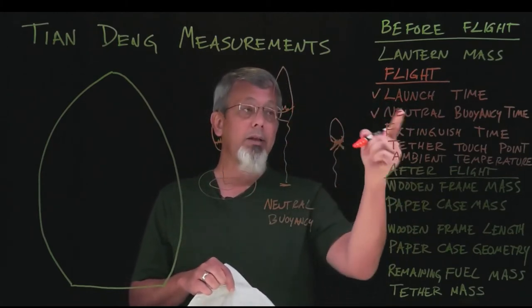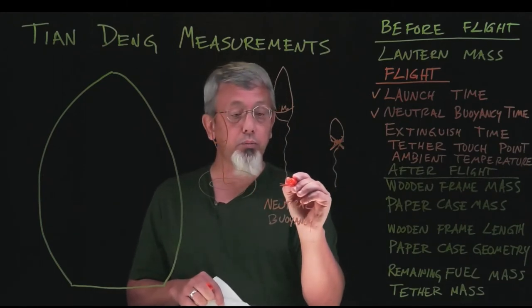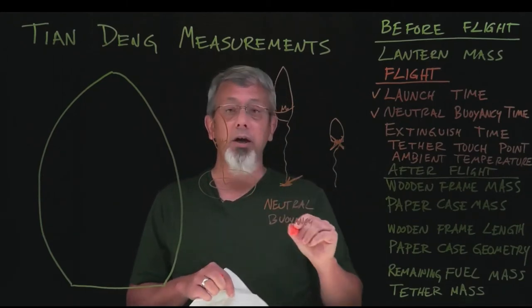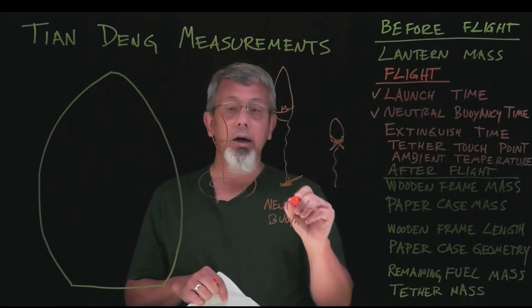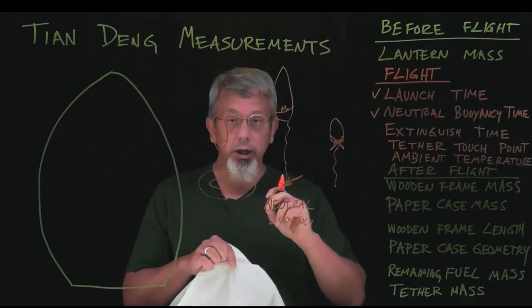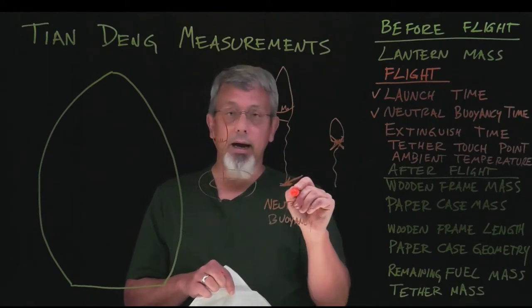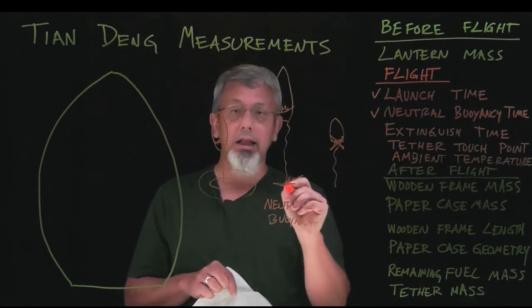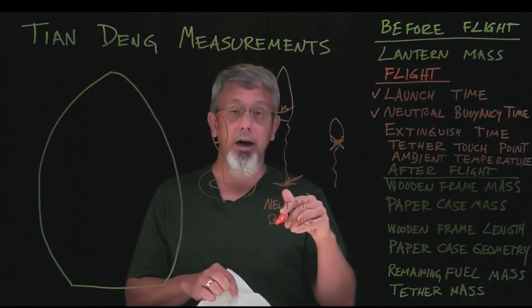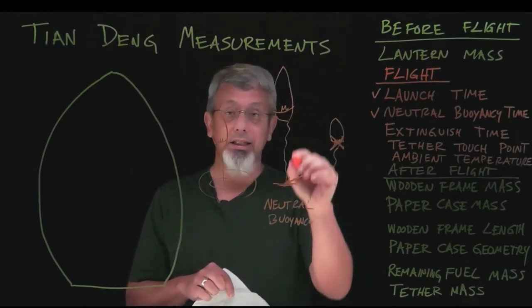Then we're going to record, to our best estimate, a neutral buoyancy time. And when we reach that neutral buoyancy time, you're to put a little tag, a piece of tape or something on there to measure the point at which the tether left the ground, so we know where to cut the tether later. We're going to cut that line off there and measure the mass of that tether.